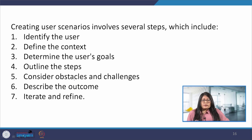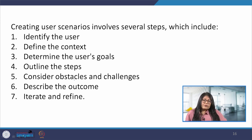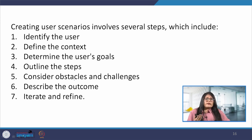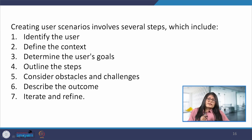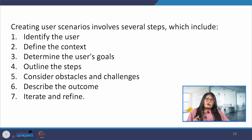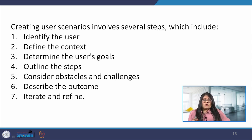The second step is to define the context — identifying the situation or context in which the user will be interacting with our product or system. Third is to determine the user goals — identifying the user goals or objectives for the interaction and what it is the user wants to accomplish. Next is to outline the steps — describing the specific steps the user will take to achieve their goals. The next step is to consider obstacles and challenges — identifying any obstacles or challenges the user may encounter while interacting with our product, including any errors or technical issues.